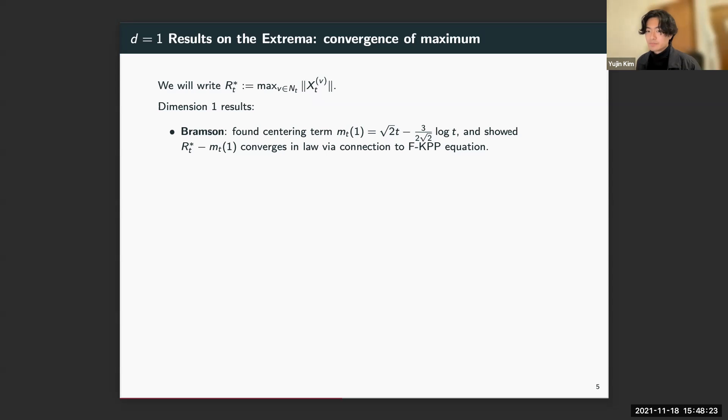In dimension one, the extremal processes have been studied extensively, starting with Maury Bramson, who was able to compute the centering term m_t^(1). Here it is: √(2t) with a log correction. He showed that the recentered maximum converges in law via connections with PDEs. I just want to point out that the centering term has leading order that matches the maximum of the IID case, while the second order term is slightly lower: it's -3/(2√2) log t instead of the usual 1/(2√2) log t.